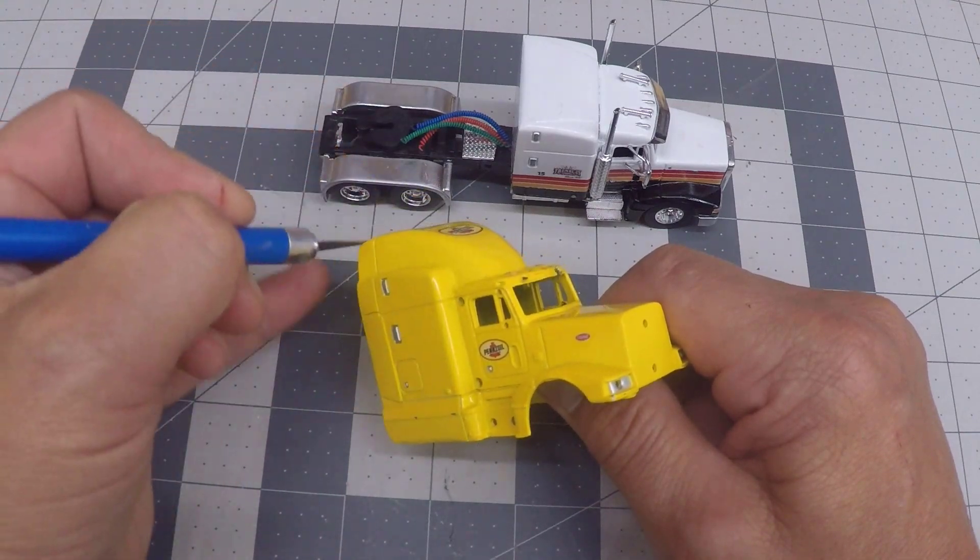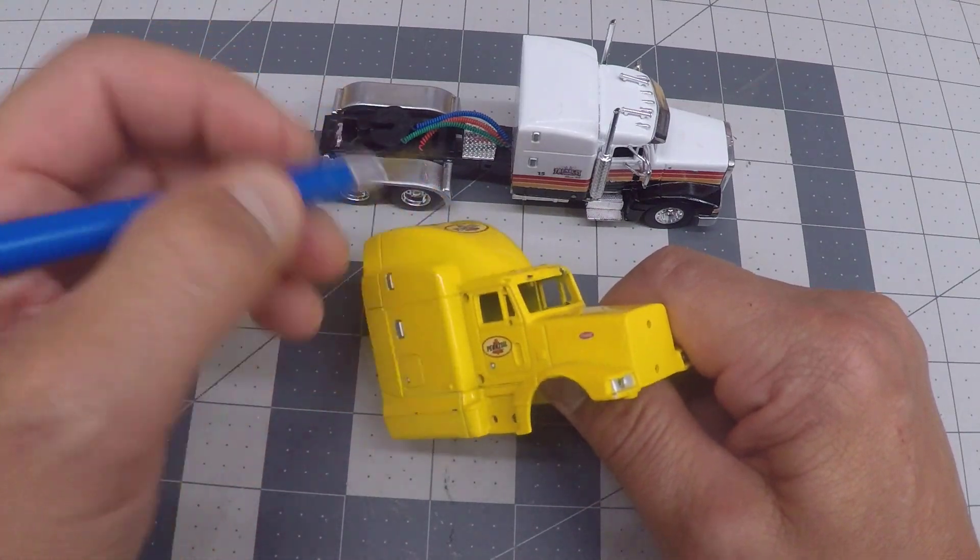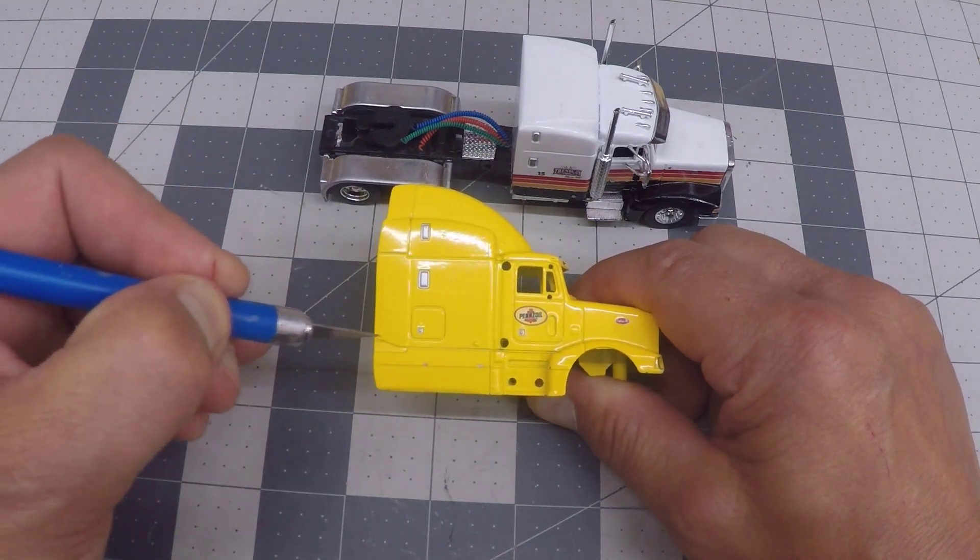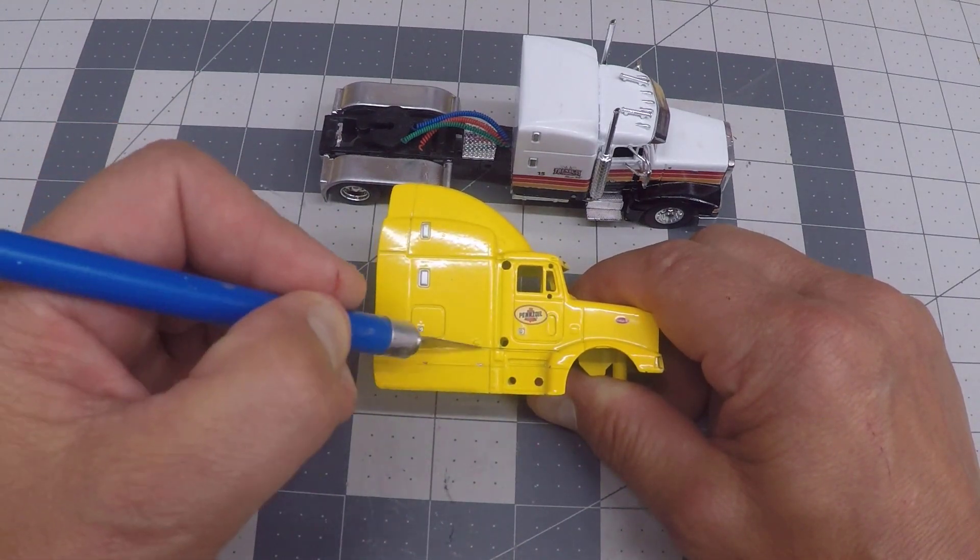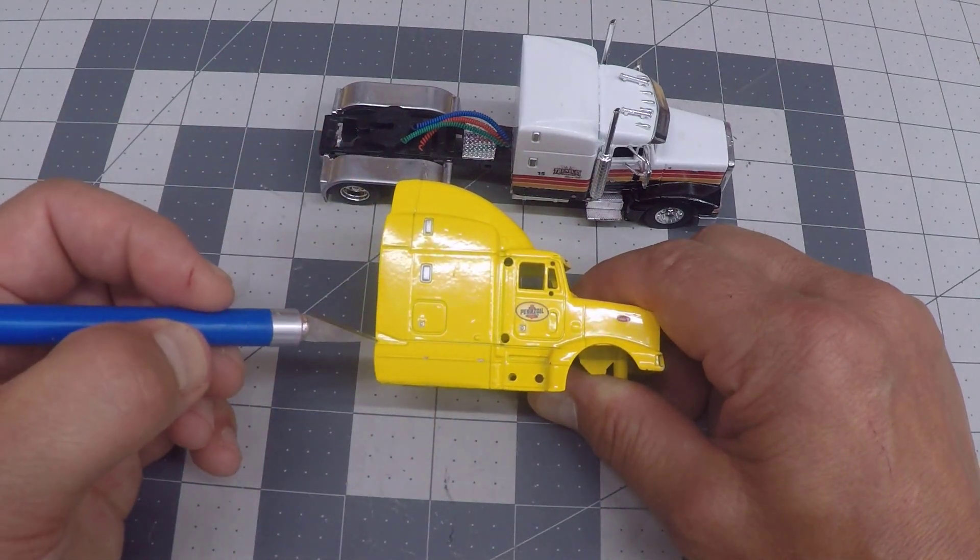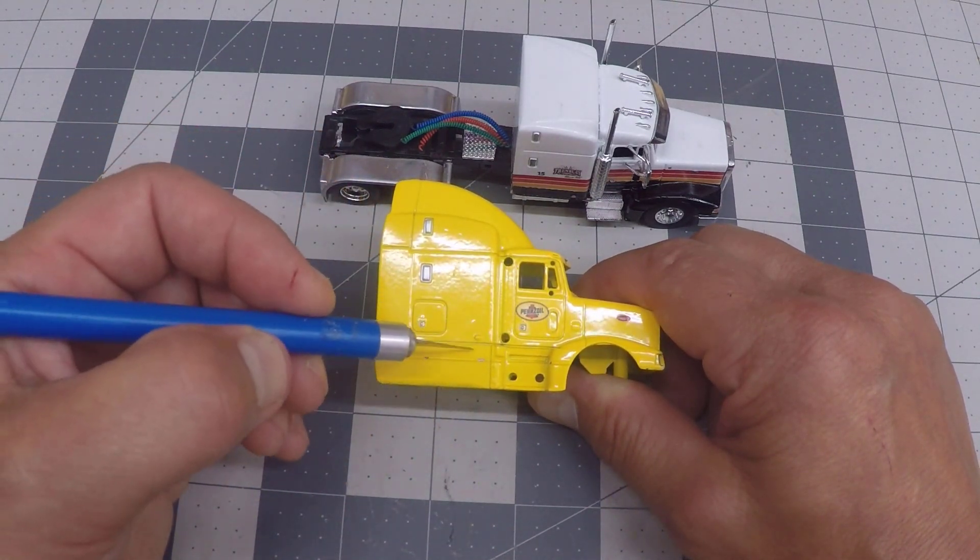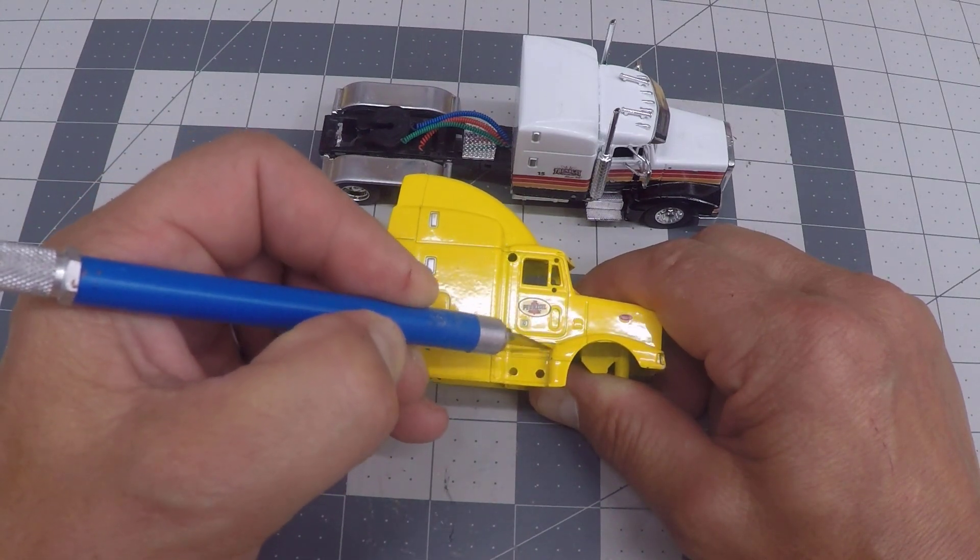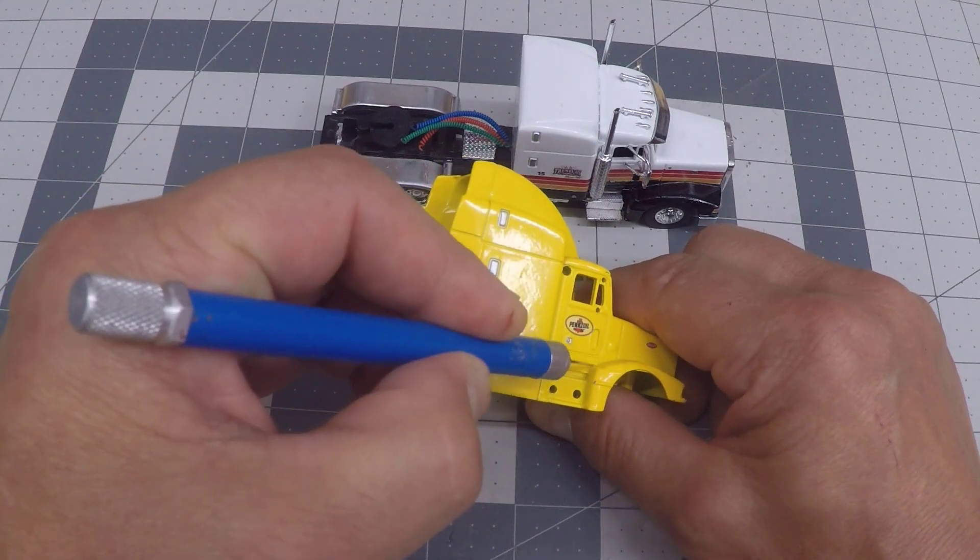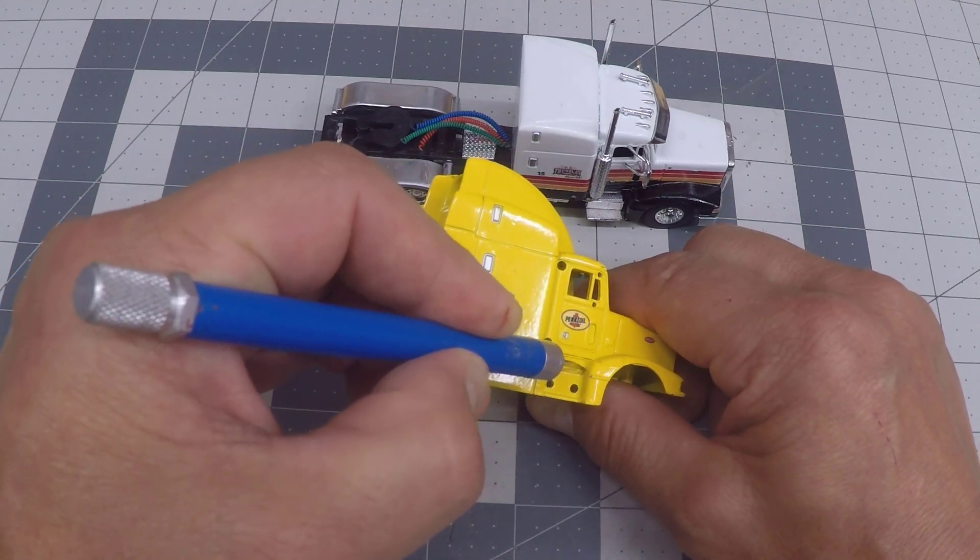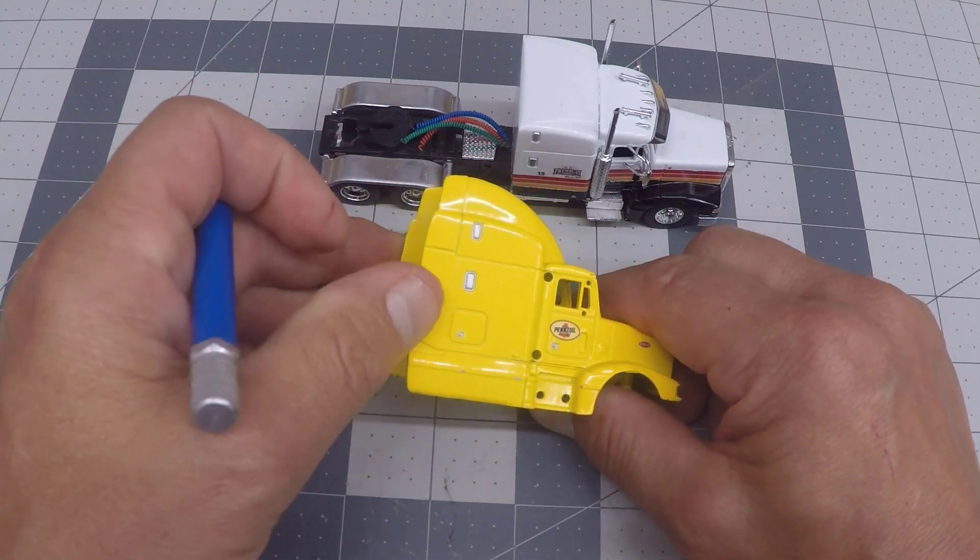This is now gone, sanded smooth, and then finally these fender skirts had to come off as well because the real truck doesn't have them. Following this line right below the sleeper and right below the door, cutting from back to front, this whole fender skirt comes off, and then right behind this front fender, also cut this down and then filed the lines smooth.